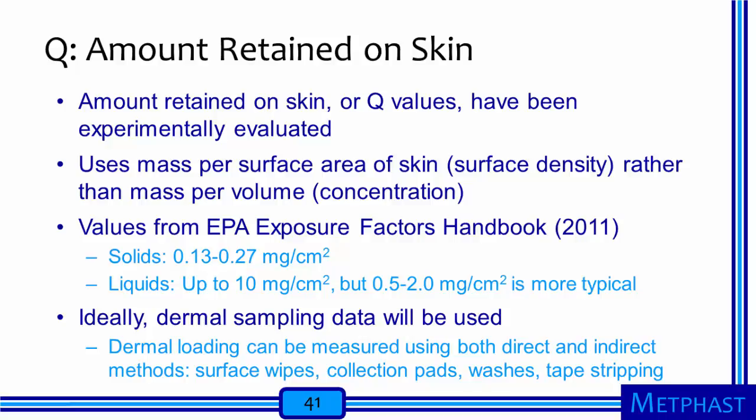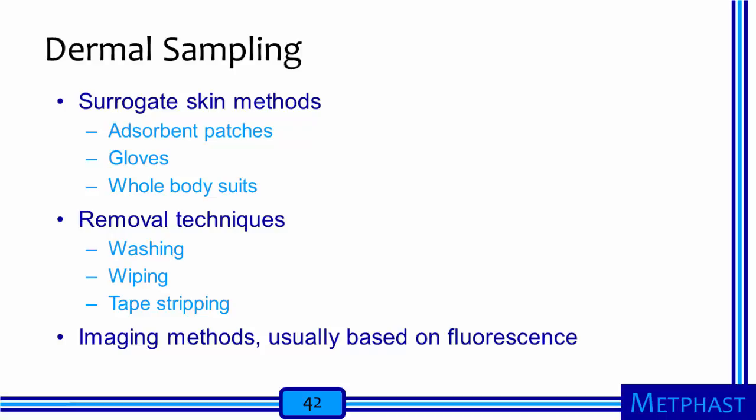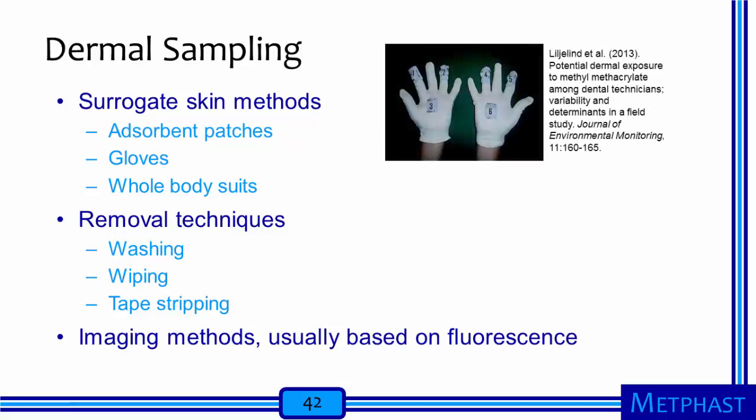Dermal sampling methods fall into three categories: surrogate skin methods, removal techniques, and imaging methods. Surrogate skin methods involve a worker performing a task while wearing something to intercept material before it contacts the skin — for example, absorbent patches attached to gloves. After the task, patches are removed and analyzed. Similar analyses can be performed using chemical protective gloves or whole bodysuits — materials are washed from the surface after the worker removes them and then analyzed chemically.